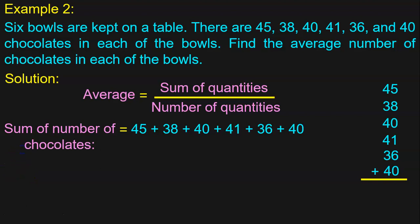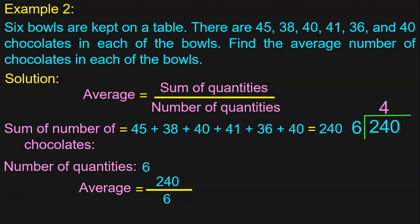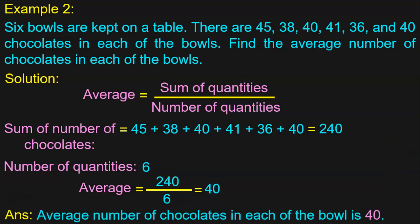5 plus 8 is 13. 13 plus 1 is 14. 14 plus 6 is 20. 0, carry over 2. 2 plus 4 is 6. 6 plus 3 is 9. 9 plus 4 is 13. 13 plus 4 is 17. 17 plus 3 is 20, and 20 plus 4 is 24. So the sum of the number of chocolates is 240. Number of quantities is the number of bowls, which is 6. Average is equal to 240 divided by 6. When you divide 240 by 6, 6 into 4 is 24, bring down 0 — 0 cannot be divided by 6, so add a 0 in the quotient. The answer is 40. The average number of chocolates in each of the bowls is 40.